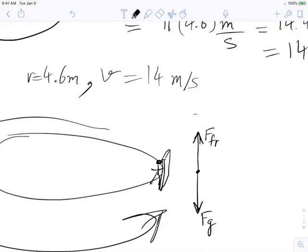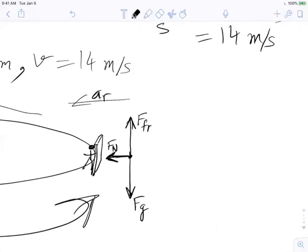They're experiencing an acceleration towards the center of the circle. Another way to put it is there's a normal force—the back of the wall, the surface is pushing up against the person. This would constitute our free body diagram.